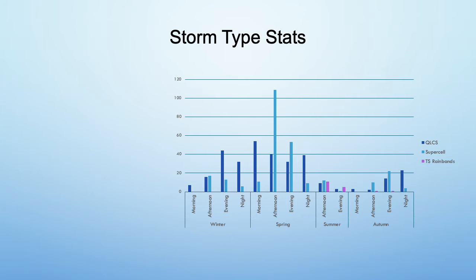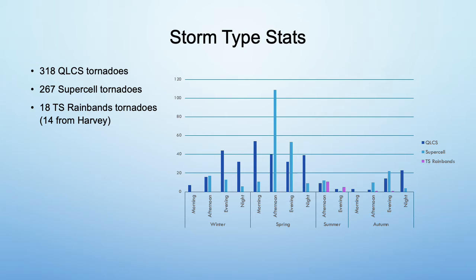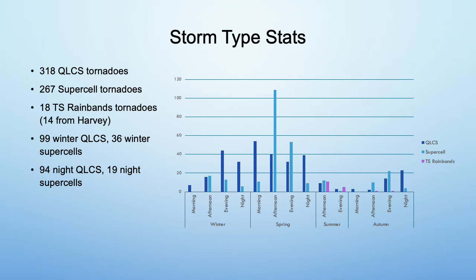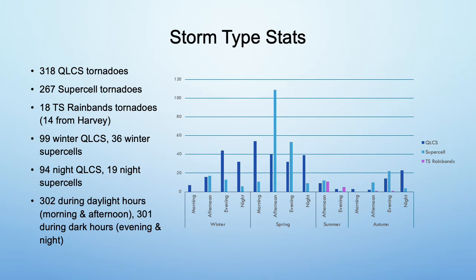Next I have some notable statistics from the data. There were 318 QLCS tornadoes, 267 supercell tornadoes, and 18 TS rain band tornadoes, 14 of which were from Harvey. I mentioned before that supercell tornadoes are most common in the spring, and you can clearly see that in this chart. I also mentioned that the Tennessee Valley has a high amount of QLCS tornadoes in the cold season and at night. There were 99 winter QLCS tornadoes as opposed to 36 winter supercell tornadoes, and 94 QLCS tornadoes at night as opposed to 19 supercell tornadoes at night. The stat that amazed me the most was that there was basically an even split between tornadoes in the daylight hours versus dark hours.